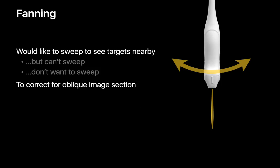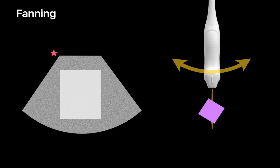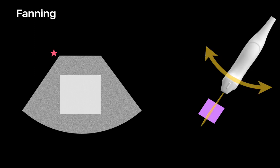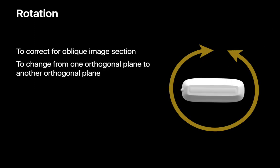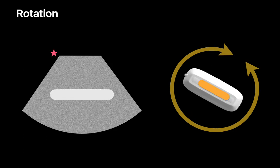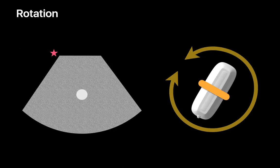Fanning like rocking is a motion we use when we prefer to sweep to see something but we either can't or don't want to sweep. Or when you want to see something in a true orthogonal short axis rather than an oblique one. Rotation is also a motion we use to see something in a true orthogonal long axis or true short axis rather than an oblique one.